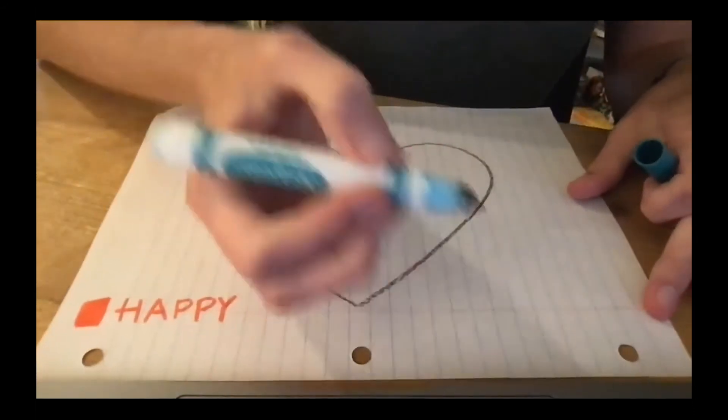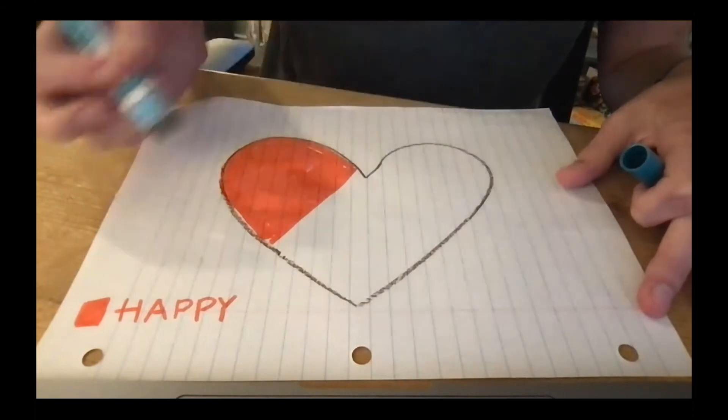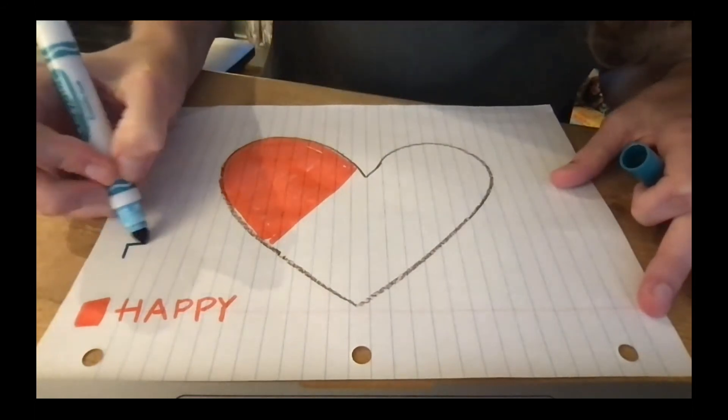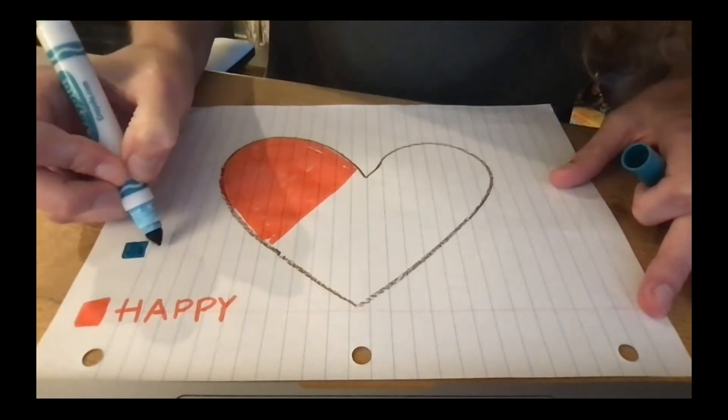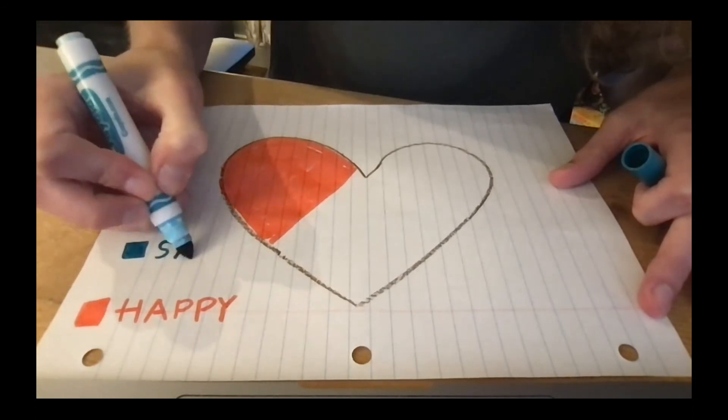I'm going to do this teal color. Whoops. Got some on my hand. That's what happens when we make mistakes. Right. And that's okay. We can do things to solve problems. So we're going to do sad. That's blue.